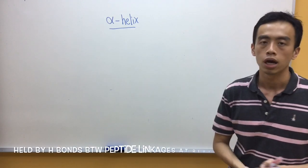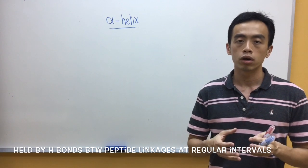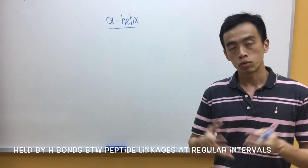Now, the alpha helix is actually our secondary structure, held together by hydrogen bonds at regular intervals between peptide nitrogen.